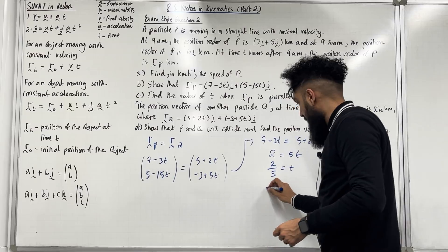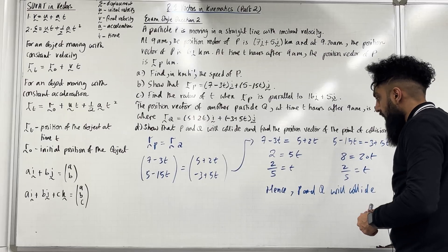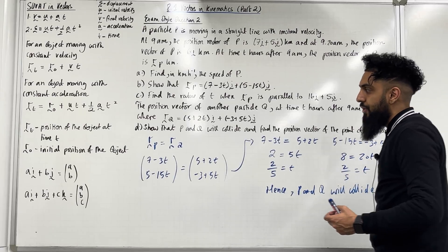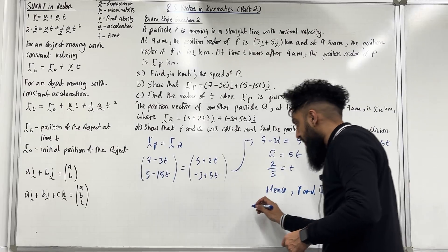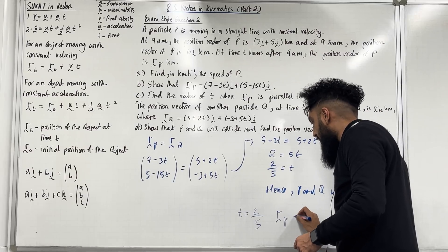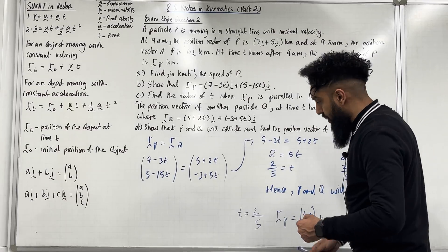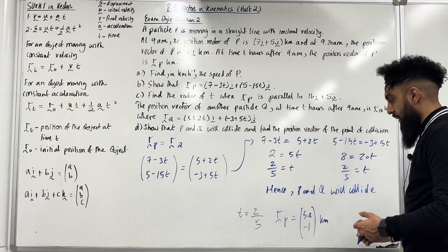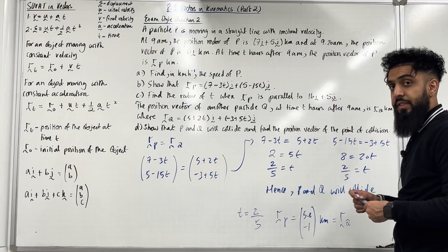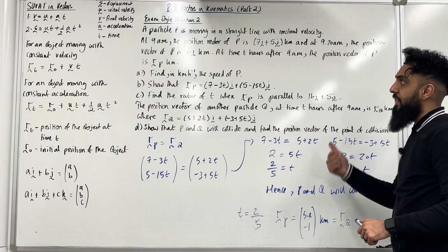To find the position vector of the point of collision, substitute T = 2/5 into R_P: R_P = (7 − 3(2/5), 5 − 15(2/5)) = (5.8, −1) km. Substituting T = 2/5 into R_Q gives exactly the same vector, confirming the collision. The position vector of the point of collision is (5.8i − j) km. This completes exam style question 2.